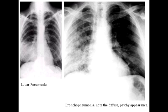What are all the organisms that can lead to bronchopneumonia? Bronchopneumonia can occur due to Strep pneumoniae, Staph aureus, H. influenzae, and Klebsiella.